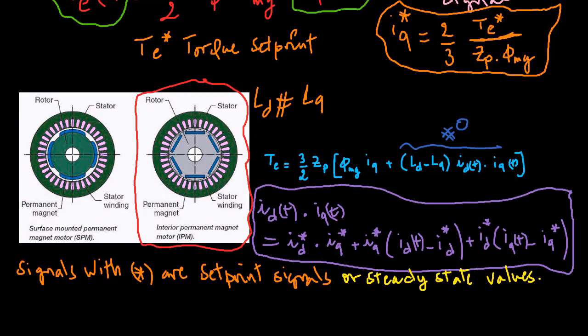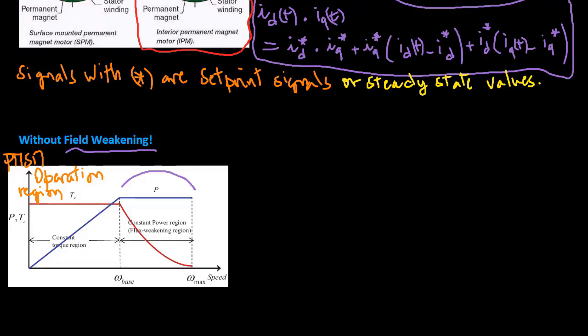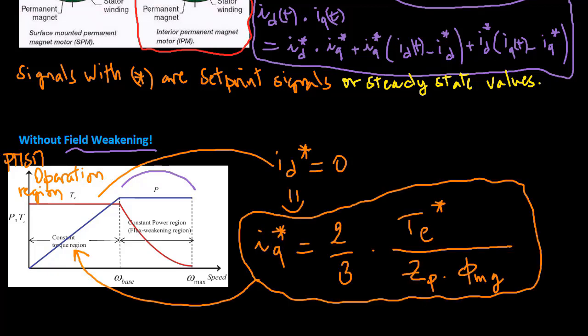When operating a PMSM motor, it is common practice to set the steady state value of the d-axis current to zero, so that the q-axis current set point signal is calculated with this relationship.